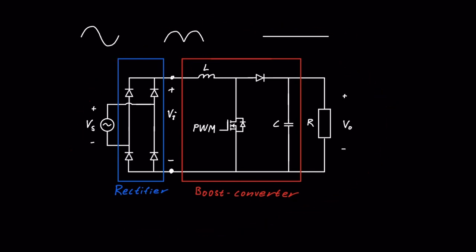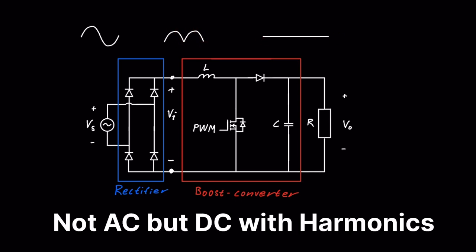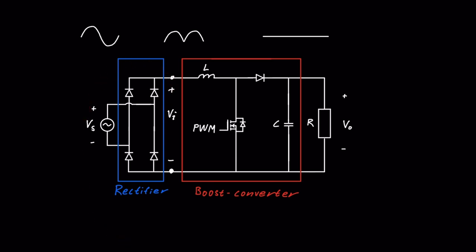This is a PFC and I will show you how it works. We have a voltage source with a sinusoidal waveform. Here we have a rectifier which simply takes the absolute value of VS to get VI. It has this waveform, and then we have a boost converter with a load. The boost converter converts from AC to DC. We only look at the boost converter with the absolute value of a sinusoidal waveform as the input.